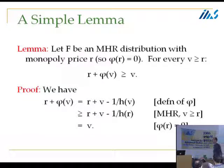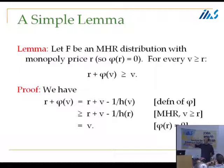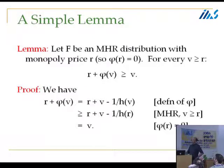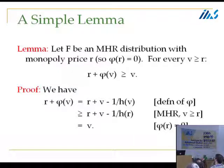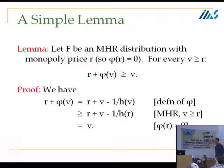Let's do the calculation. We start with the reserve plus the virtual value. The virtual value by definition is the value minus one over the hazard rate of the distribution. By the monotone hazard rate condition, since v is at least r by hypothesis, the hazard rate at r is smaller, so one over the hazard rate is bigger — subtracting a bigger thing gives a smaller number. And since the monopoly reserve price is characterized by having virtual value zero, those terms drop out. Simple calculation shows: reserve plus virtual value of something above the reserve is at least the value.